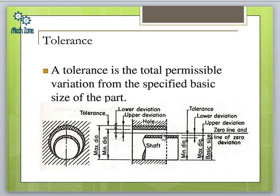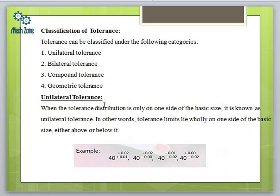Here we have a shaft and a hole shown, with upper and lower deviations given for each. Tolerance can be calculated by subtracting the lower limit from the upper limit. The upper limit equals basic size plus the upper deviation, and the lower limit equals basic size plus or minus the lower deviation. The classification of tolerance includes: unilateral tolerance, bilateral tolerance, geometric tolerance, and compound tolerance — though geometric and compound tolerances are not important for this lecture.